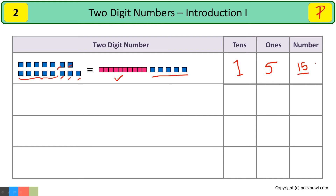Hope you understood this concept. Remember that ones and tens are called place values. So in the number fifteen, the ones place value is five and the tens place value is one.